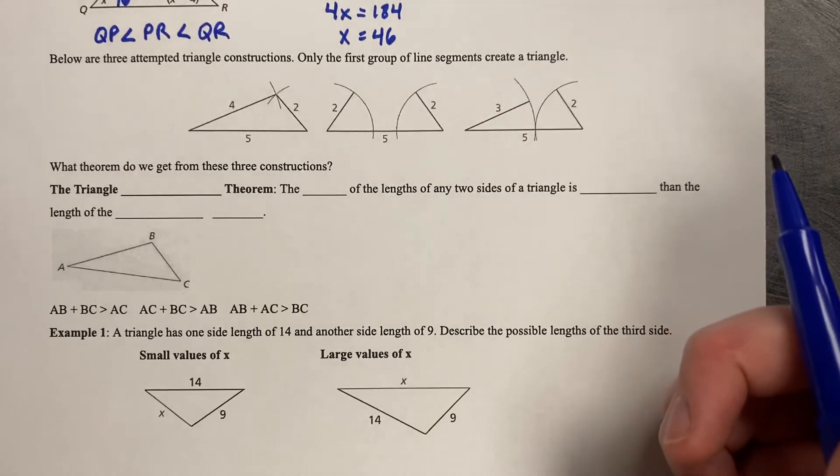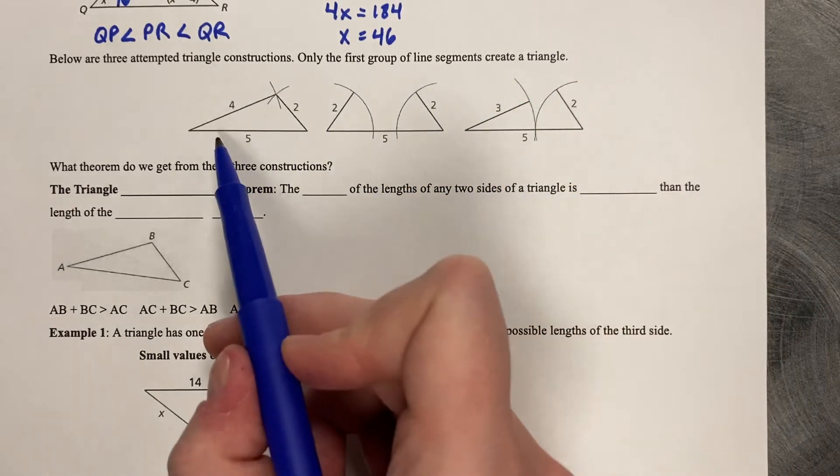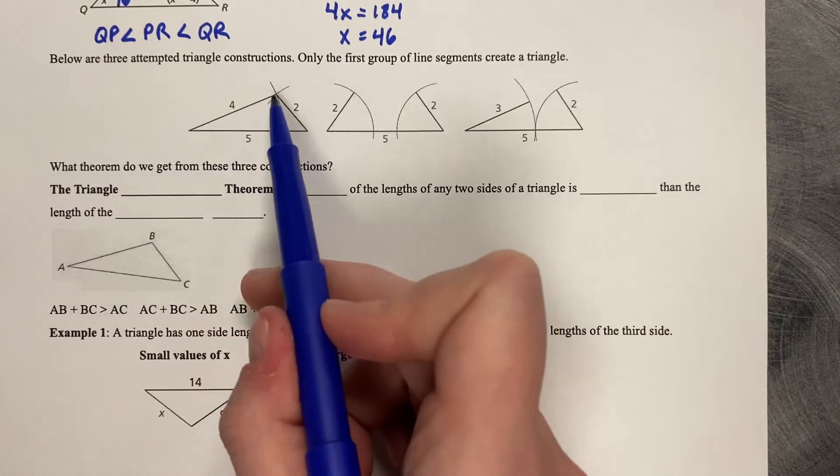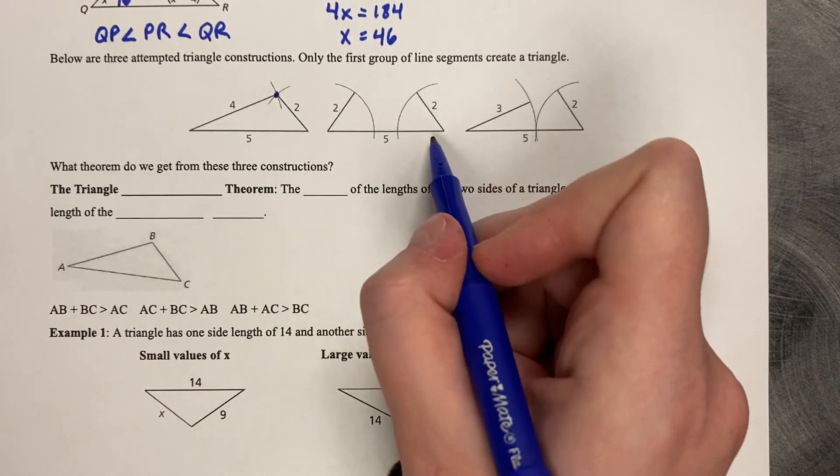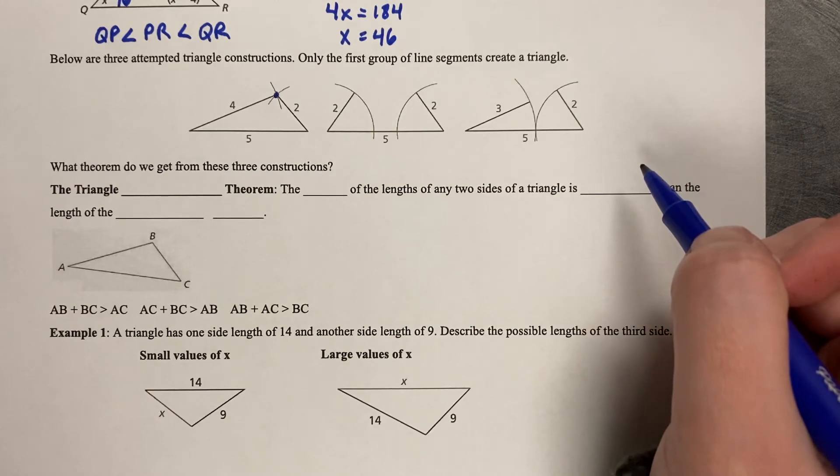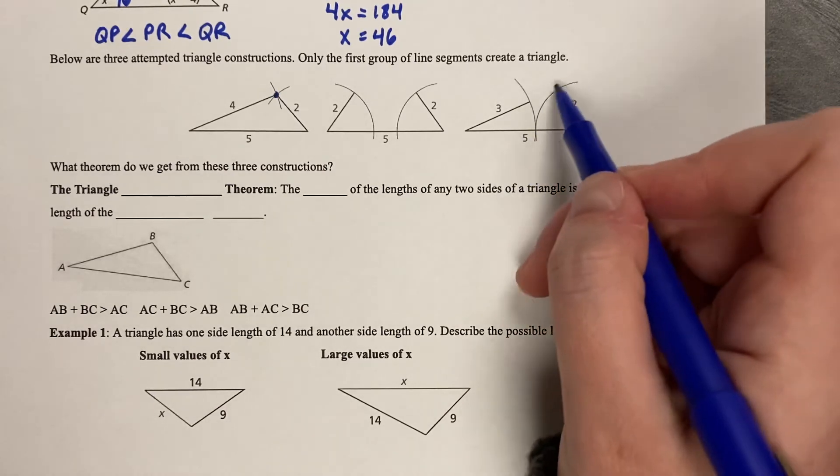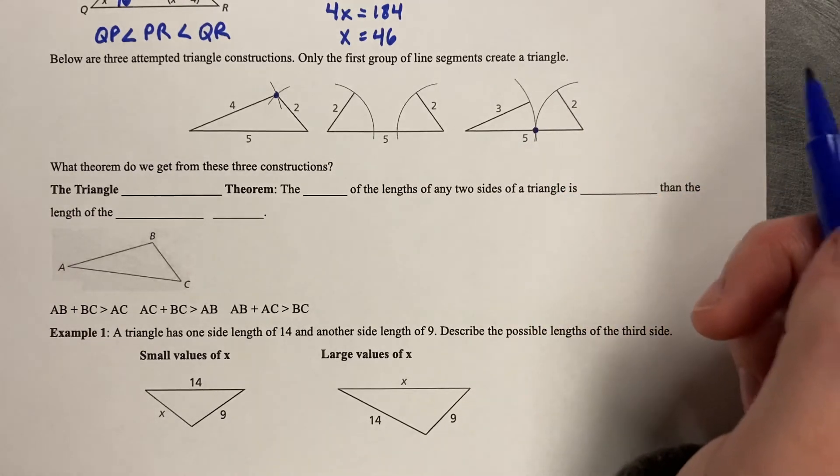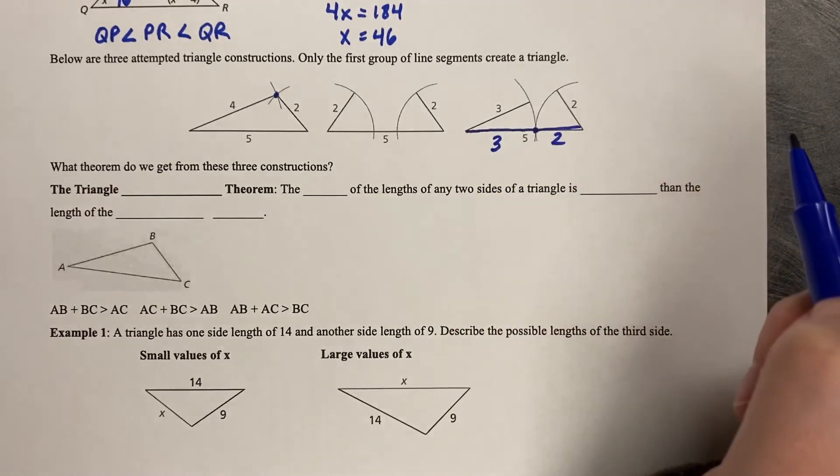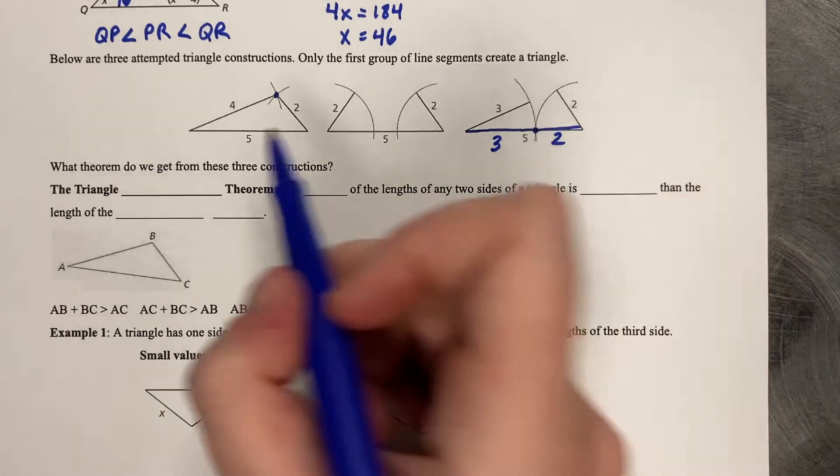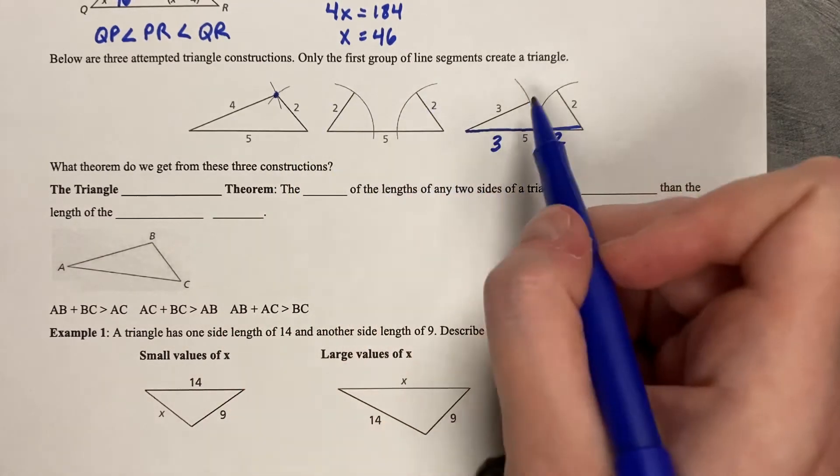Below are three attempted triangle constructions. Only the first group of line segments create a triangle. So take a look. So if you've got 5 and then 4 and 2, those will connect up to make a triangle. But if you've got 5 and 2 and 2, it's not long enough on either side to connect up. And then what about 5 and 3 and 2? Well, 3 and 2 is 5. So look what happens. It comes down and it meets back down on that line. So that means that this is 3 units long and this is 2 units long. So it doesn't make a triangle. It just makes one single line.